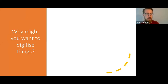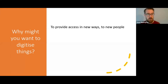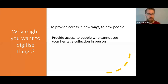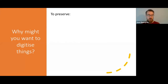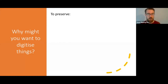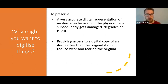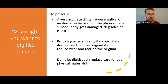So why might you want to digitise things? Essentially, to provide access in new ways for new people — to people who cannot see your heritage collection in person, often because operating a publicly accessible archive is quite expensive, or travel costs are prohibitive, or due to disability or a pandemic. You might also digitise to preserve items: a very accurate digital representation can be very useful if the physical item gets damaged or degrades. Providing access to a digital copy also reduces wear and tear on the original. That said, do preserve and look after your physical materials as well — don't just rely on digitisation.